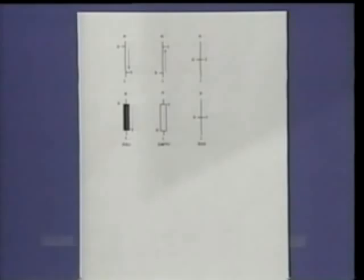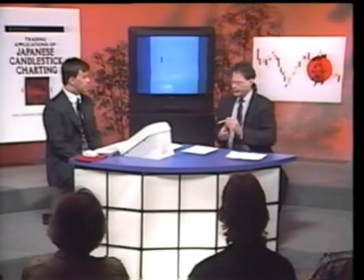I assume that everyone here is familiar with the bar chart, in that we have a vertical line — the bottom represents the low of the day, the top represents the high of that trading cycle. They put a horizontal slash to the left-hand side that represents the open, and to the right the close. This is a day in which it closed lower.